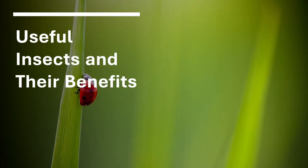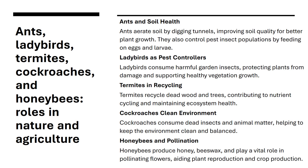Insects like ants, ladybirds, termites, and honeybees play important roles in nature and agriculture. Ants aerate soil and control pests, ladybirds protect plants from harmful insects, termites recycle dead wood, cockroaches help clean the environment, and honeybees aid in pollination, honey, and beeswax production.